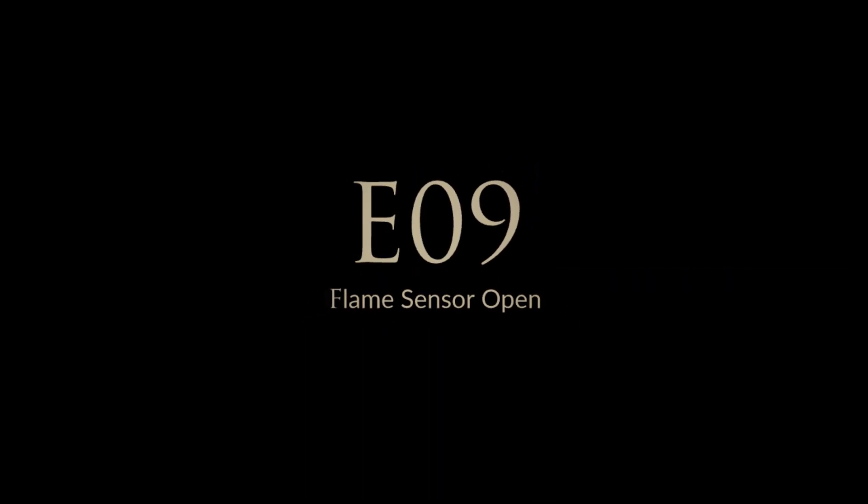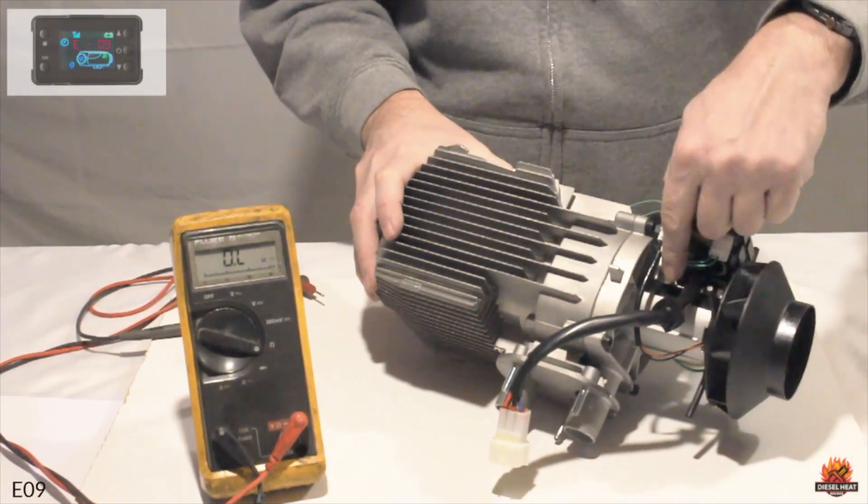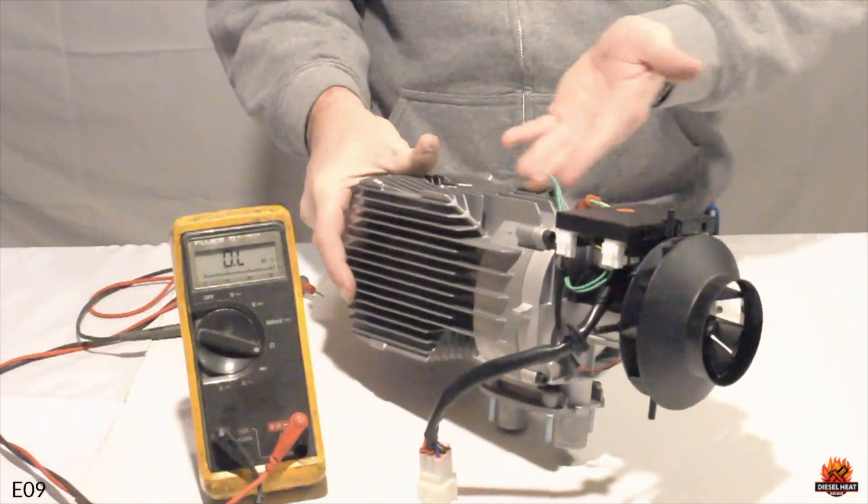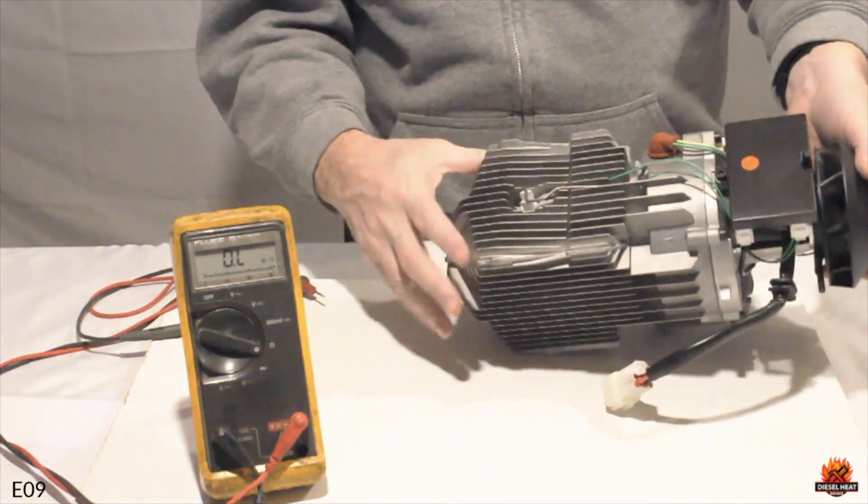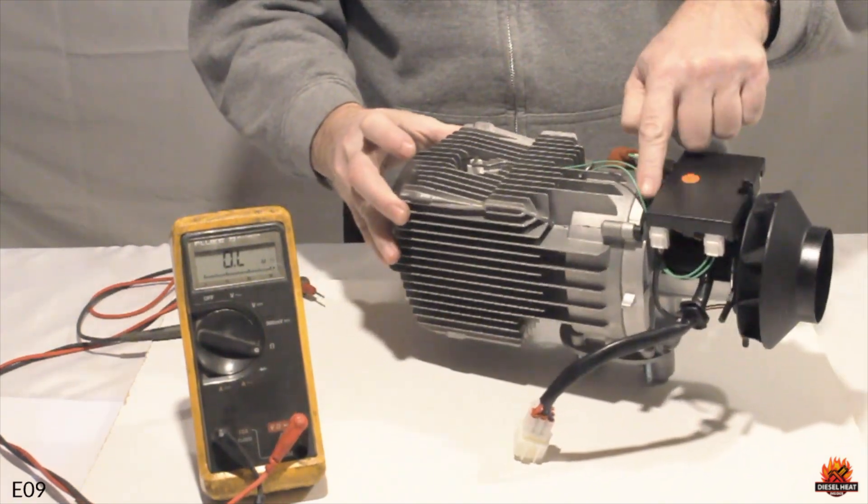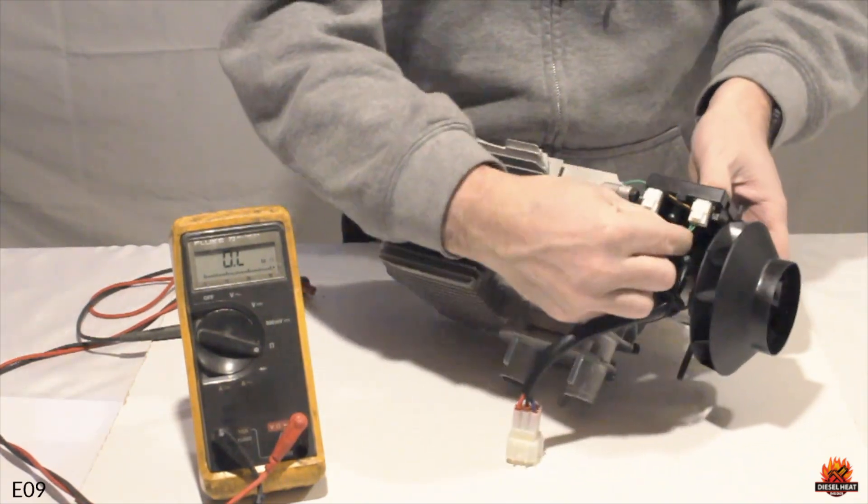Error code 9, flame sensor open. To fix error code 9, we need to check three places. The first thing we need to check is to make sure our flame sensor is indeed plugged into the correct spot. Also making sure that the connections are snug with no play.